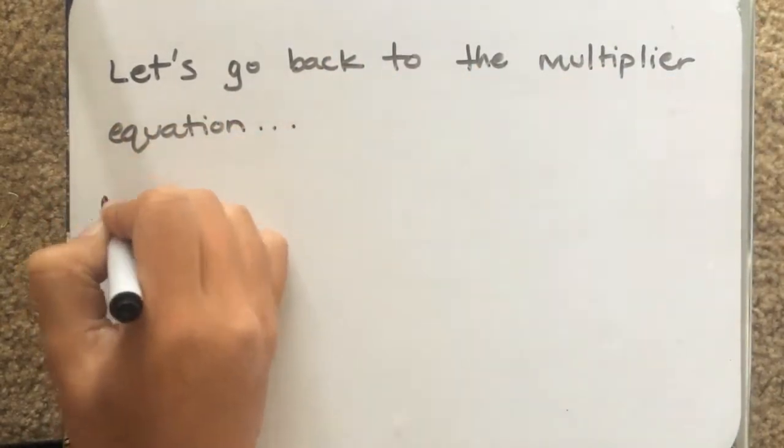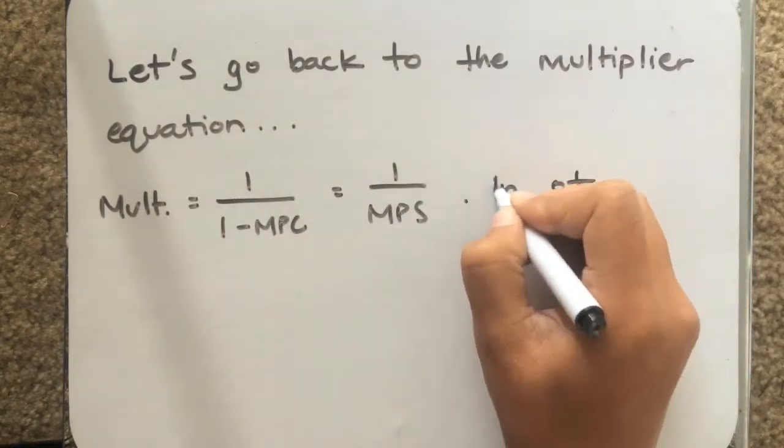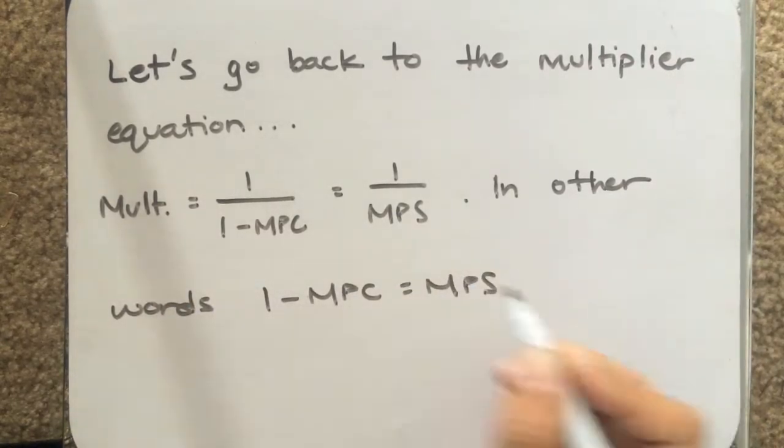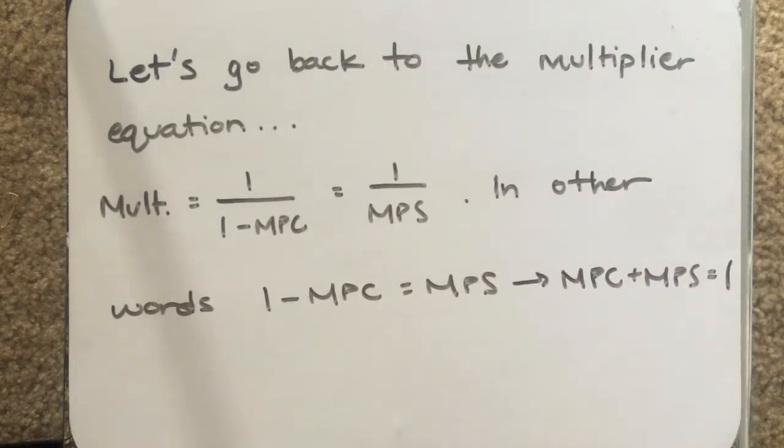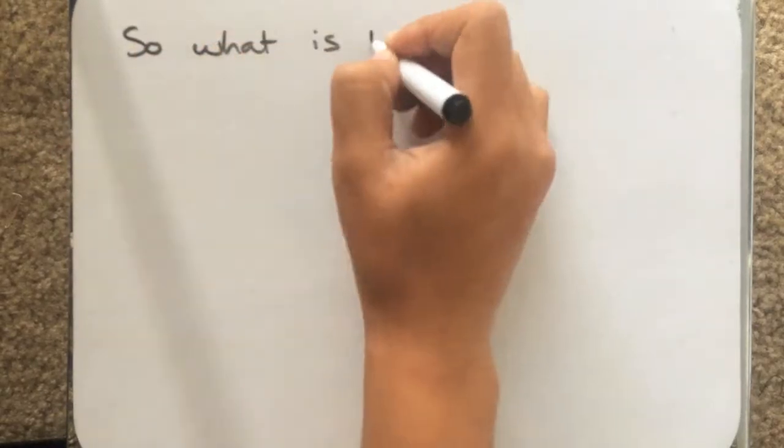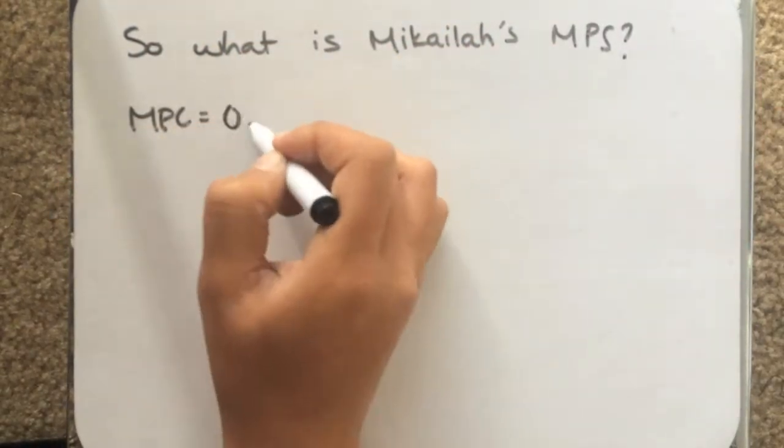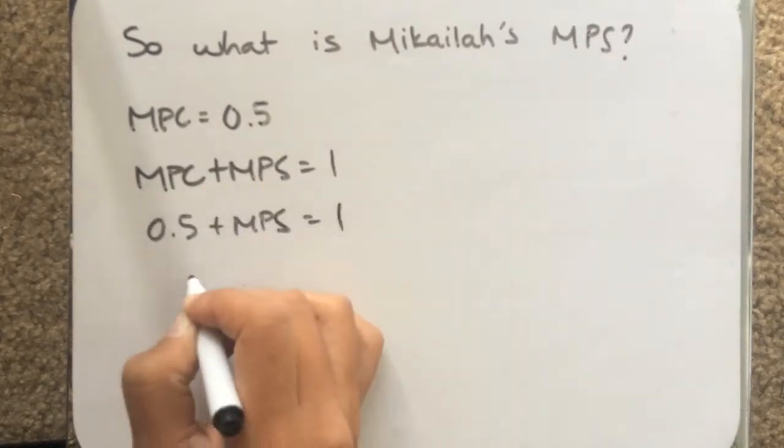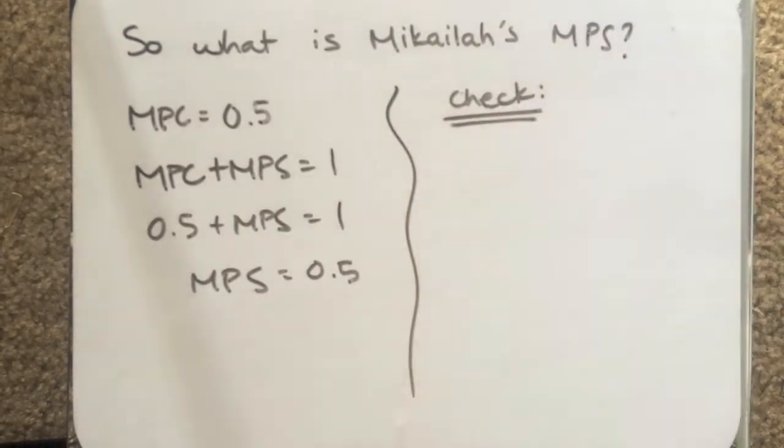The multiplier equation is 1 over 1 minus marginal propensity to consume, which can also be written as 1 over marginal propensity to save. And we can define marginal propensity to save as MPC plus MPS equals 1. So what is Michaela's MPS? Well, we can find this if we have the other one. So her MPC is 0.5. Through algebra, we can now define that her MPS is 0.5 as well.